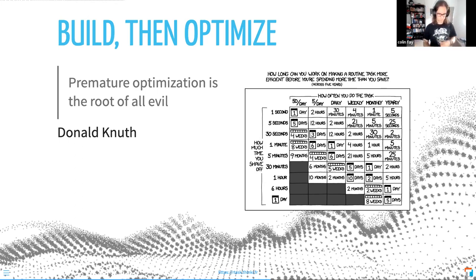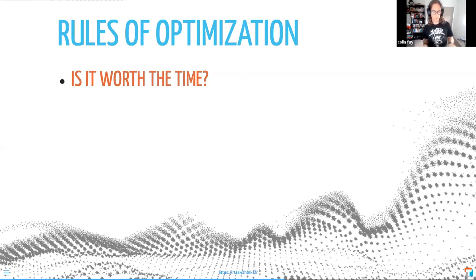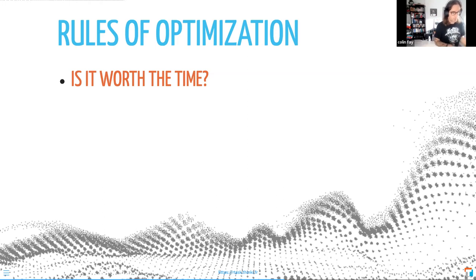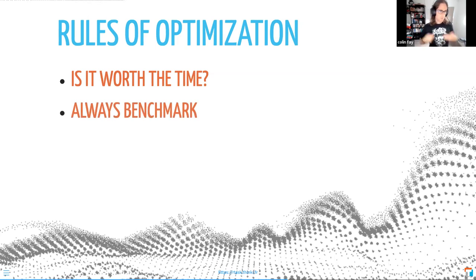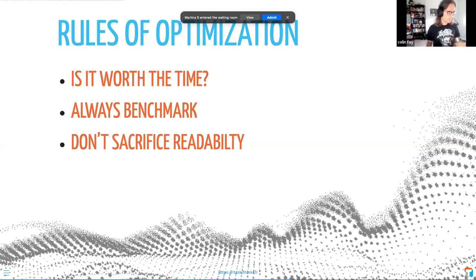Is it worth the time? That's the question you should ask yourself: do I spend four days optimizing for half a second of a function that's called once a week? This is something I wish I had known — I was optimizing and then realized it wasn't worth my time. Always benchmark, because you have to prove it's actually faster. And don't sacrifice readability. If you're converting a standard function into C++, you have to think about long-run maintenance. We have some internal tools with C++ in them — they're fast, but nobody can maintain them if nobody knows C++.